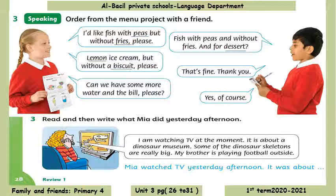Now open page 28, exercise 3: order from the menu with a friend. In this exercise you are going to imagine that you have a friend and you are making conversation about food. I'd like fish with peas but without fries, please. Fish with peas and without fries. And for dessert, lemon ice cream but without a biscuit, please. That's fine. Thank you. Can we have some more water and the bill, please? Yes, of course.